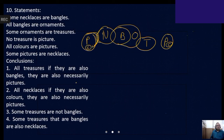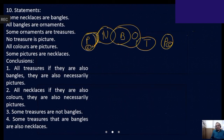Whenever they give a hypothetical situation in a choice, the statement gives certain instructions and the choice gives another instruction. 'All treasures if they are also bangles — are they necessarily pictures?' Treasure and ornament in one diagram, ornament and bangle in one diagram. If every T becomes B, does it also become a picture? No — there is no direct touch between bangle and picture. So the answer is no.